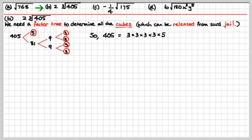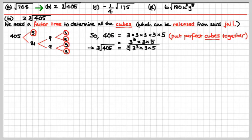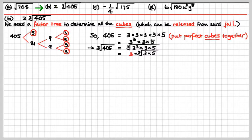Now we have to put them in cubes, not squares. There's the first three bunched up together, and then the 3 and the 5 that are left over. So the cube root of 405 would be the cube root of all that stuff. The first lot gets out of cube root jail — he gets off scot-free. Unfortunately, we're left with the 3 and the 5 in the cube root sign. But looking back at the question, we were asked for 2 times the cube root of 405. So 2 times that gives us 6 times the cube root of 15. And that's the answer.